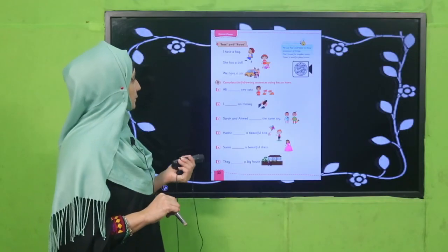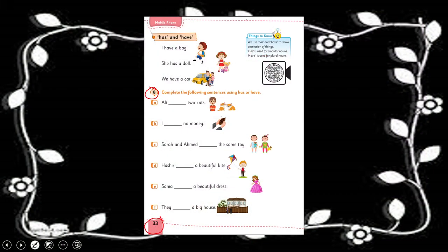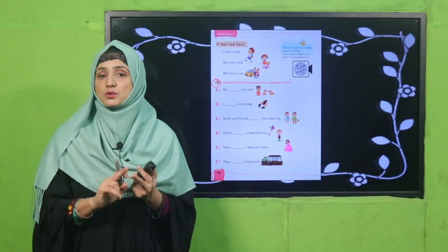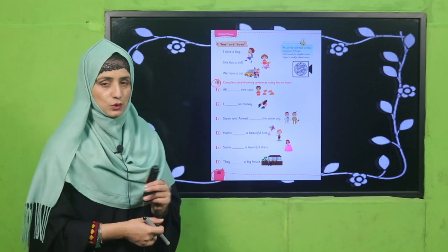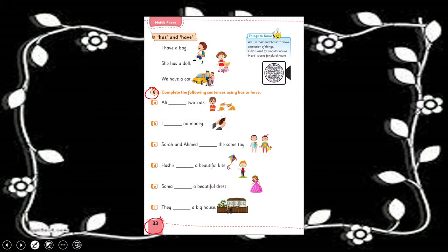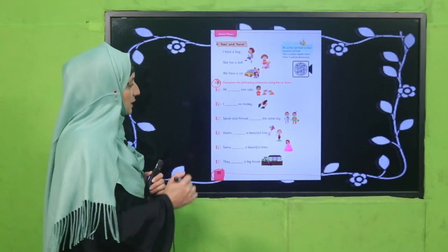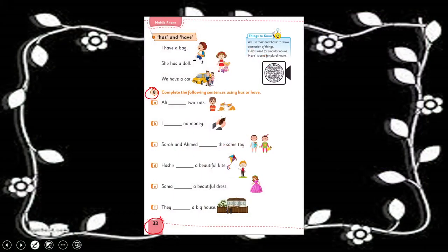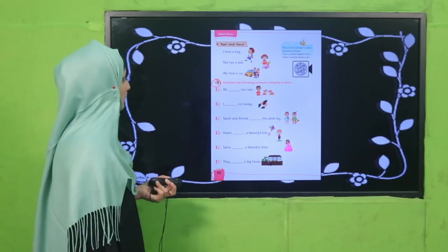Now on page number 33, question number 8: complete the following sentences using 'has' or 'have.' Be careful — use 'has' with singular naming words and 'have' with plural naming words. Please pause the video and do this activity in your class on your book. Welcome back! I hope you have done it nicely. For example: 'Ali has two cats' — even though there are two cats, our subject 'Ali' is singular, so we use 'has.'